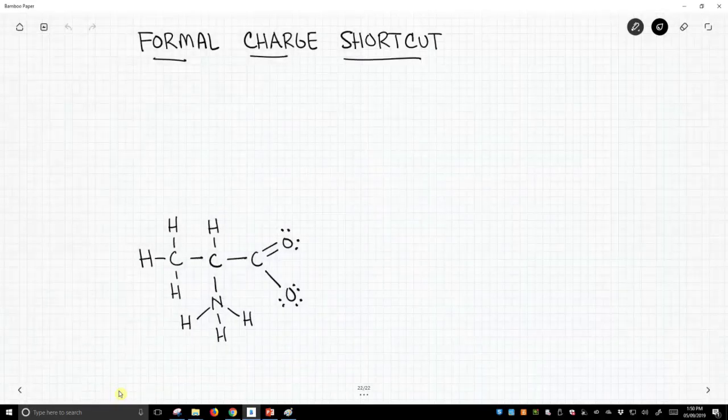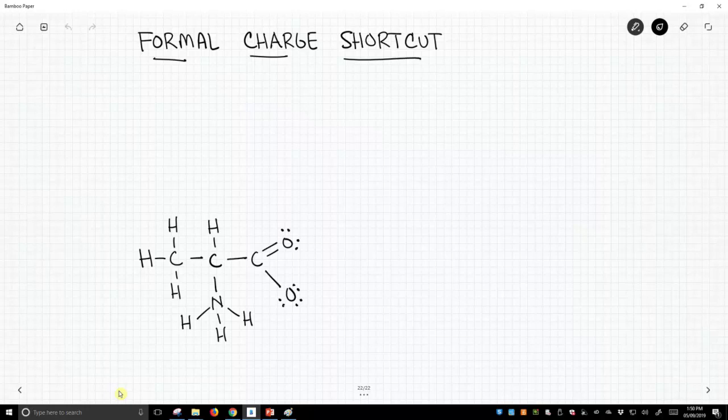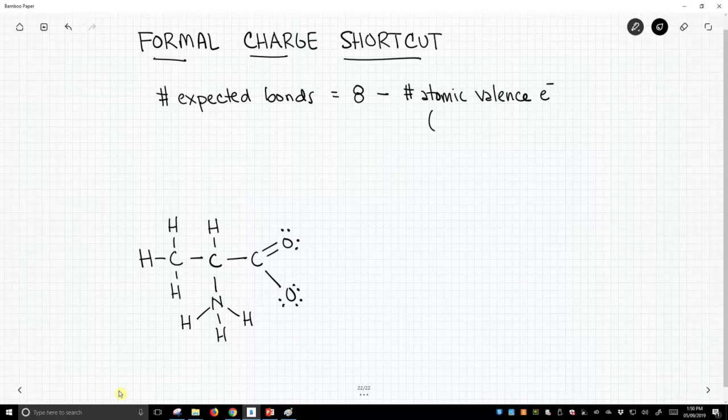Okay, so in our shortcut, we're actually going to forget about lone pair electrons and we're just going to count bonds. As it turns out, our second row elements are very predictable in how many bonds they like to form. So the number of expected bonds for our common elements is going to be 8 less the number of atomic valence electrons, and we simply get this as the group number off the periodic table.